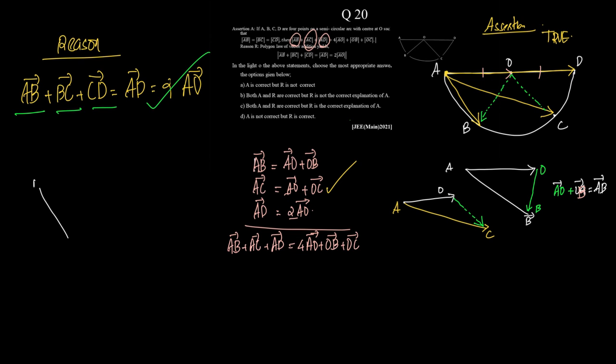See, if you draw this alone, so this is AB and then we have got BC, then we got CD. So it directly means that if AB, BC and CD,